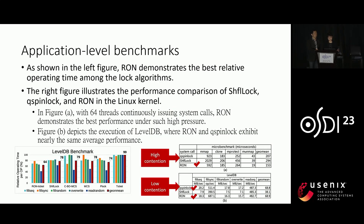Moving to application-level benchmarks, RUN excels in relative operating time as shown in the left figure, outperforming other lock algorithms. We also implemented RUN in the Linux kernel. RUN demonstrates superior performance under high pressure when a microbenchmark with 64 threads continuously issues system calls, as shown in figure A. Additionally, RUN and Q-spinlock exhibit similar average performance in the execution of LevelDB in figure B. RUN exhibits higher performance in high contention scenarios while maintaining the same performance as Q-spinlock in low contention situations.